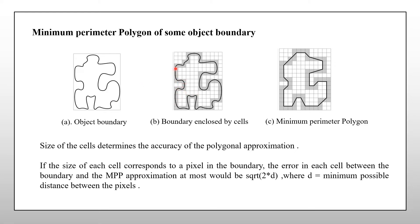Here, this gray color region represents the cellular complex. By joining each and every cell in this cellular complex, we can get the minimum perimeter polygon. Here, the accuracy of the polygon can be determined by using the size of a cell.